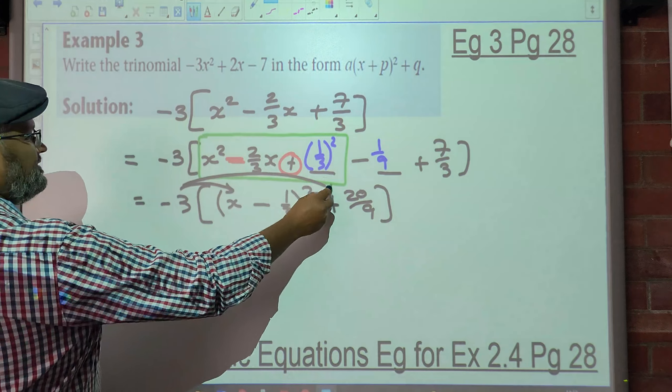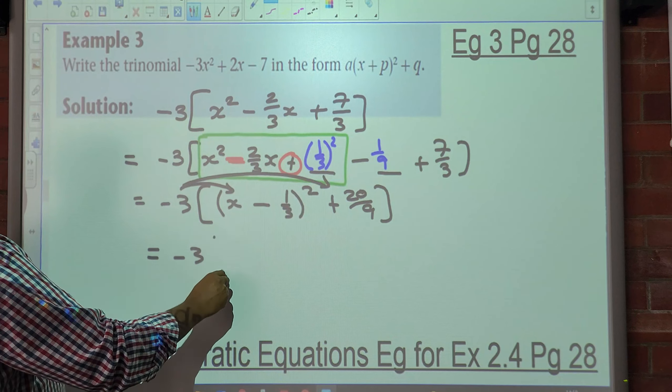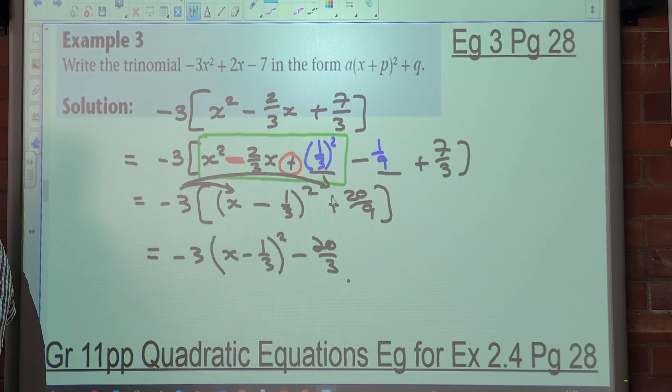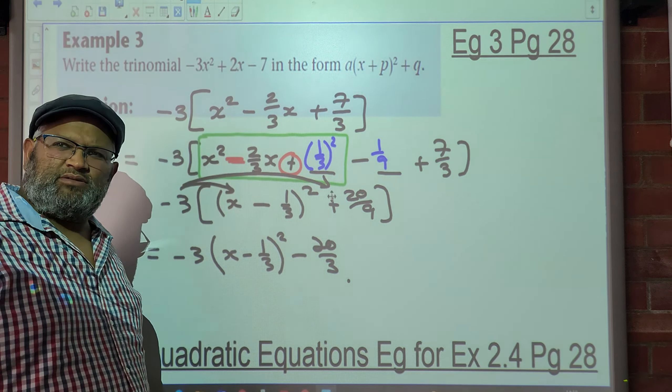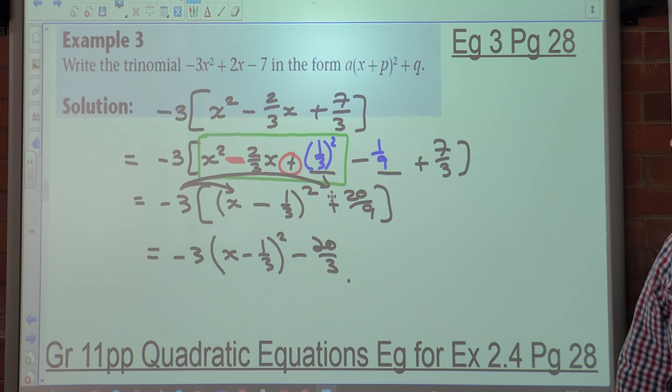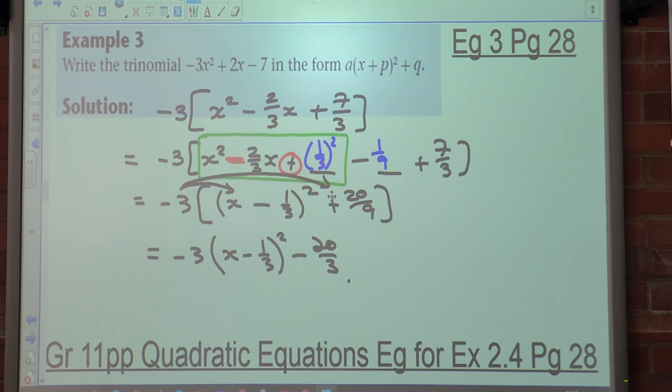So what do we do now? Multiply that. So it's going to be -3(x - 1/3)² - 20/3. You guys understand? Is there any confusion? All right, your homework is exercise 2.4. You're going to do for me the odd numbers for tomorrow, okay? Good afternoon, class. Yes, sir. Thank you.